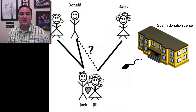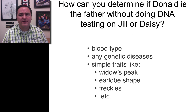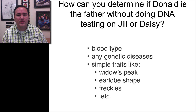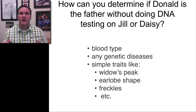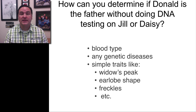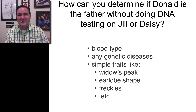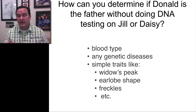Luckily he knows a little bit about genetics, so that's what we're going to go on a path of discovery with him. How can you determine if Donald is the father without doing DNA testing on Jill or Daisy? Well, there are lots of characteristics that are passed on from parent to offspring, some of which you've heard of before — things like blood types, genetic diseases, and simple morphological traits.